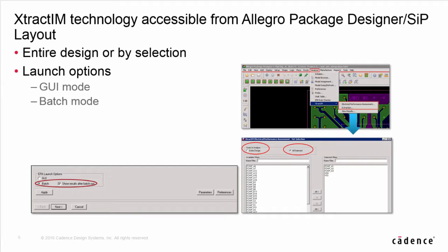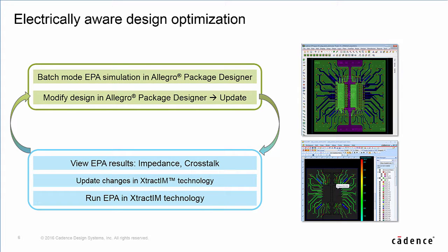In this integration flow, layout designers can access Sigurd E-Track IM either in GUI or batch mode. In the early design stage, designers can select only critical nets to perform EPA analysis for best performance. In the final design stage, designers can run the whole package design EPA analysis. Access to Sigurd E-Track IM from APD empowers layout designers an efficient way to design better packages in a shorter time. This flow is started from APD running batch mode EPA. When simulation is completed, the result viewer will be displayed side-by-side with APD. Designers can easily identify design weaknesses according to the color spectrum in the result viewers.